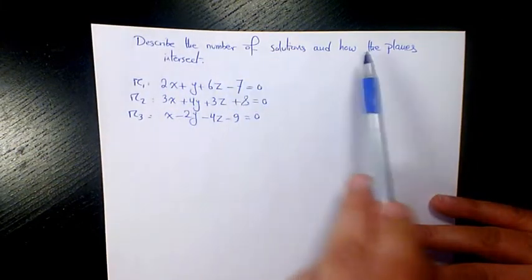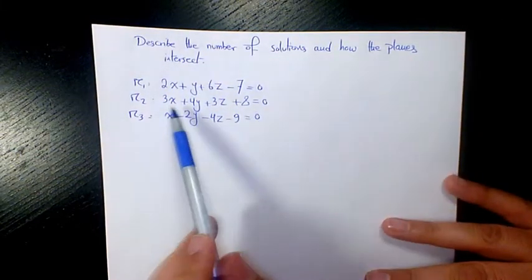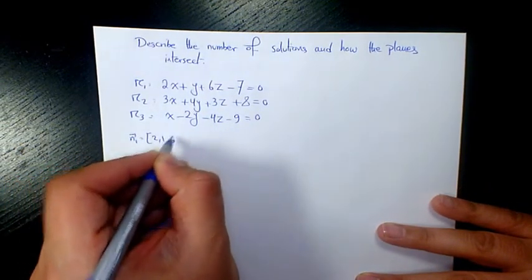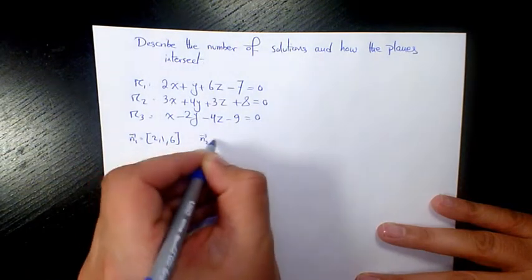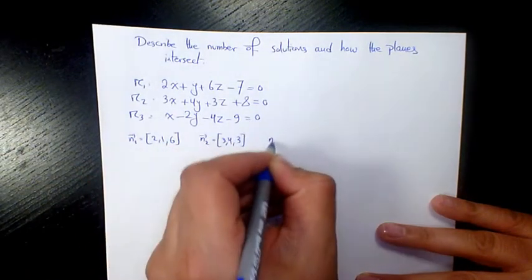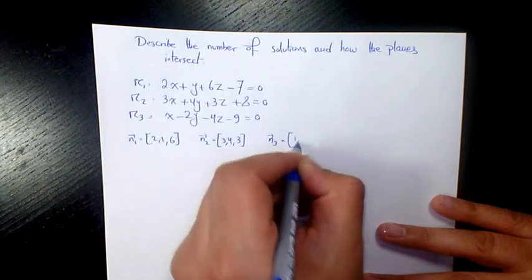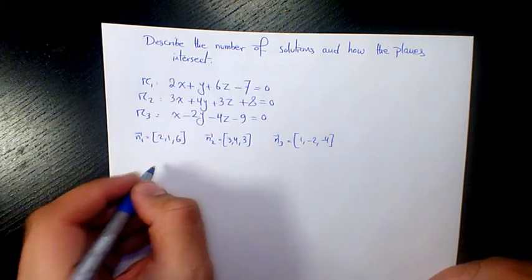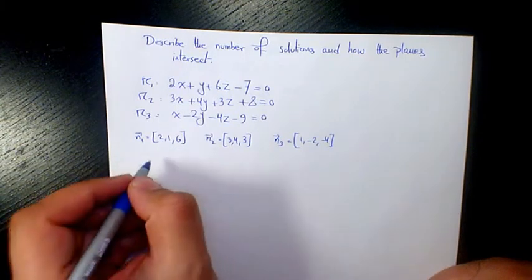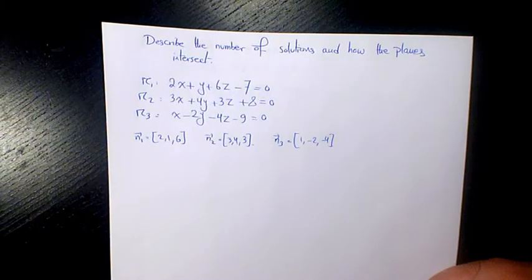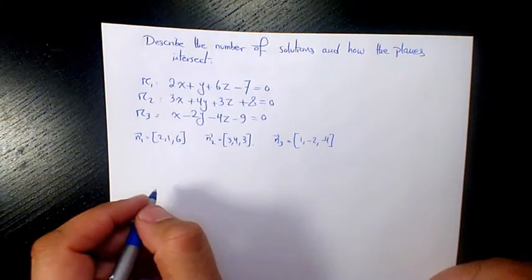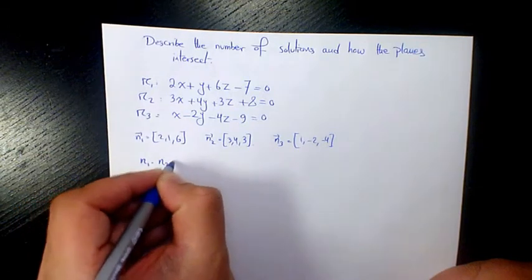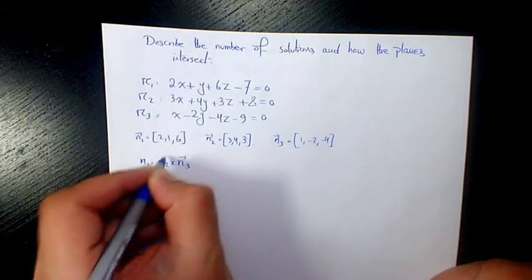Let's see the first example: describe the number of solutions and how the planes intersect. Writing the normals: n1 is (2, 1, 6), n2 is (3, 4, 3), and n3 is (1, -2, -4). None of them are parallel. Now let's check if they are coplanar using n1 dot (n2 cross n3). To figure out coplanarity we compute the scalar triple product.